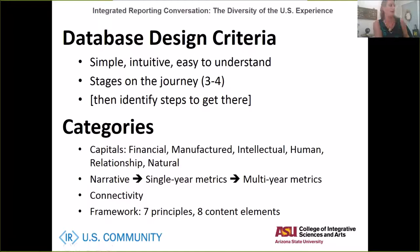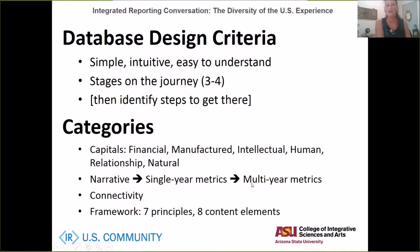The categories we used to determine a score between one and four looked at four things. First, the types of capitals being discussed — of course everyone talks about financial, but what other of the five are they talking about? Second, are they using just narrative format or do they have metrics to quantify resources, ideally tracked over multi-year metrics? Third, connectivity — are they demonstrating integrated thinking showing the strategy behind resource inputs and how these are transformed through their business model into outputs, outcomes, and impact?